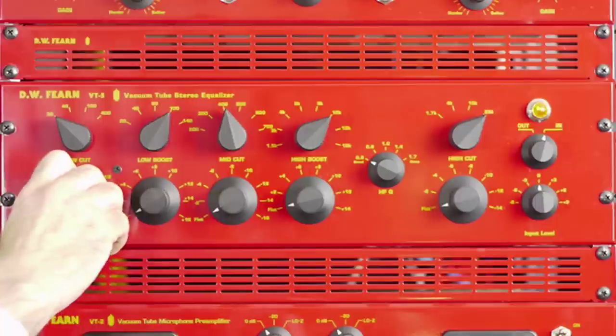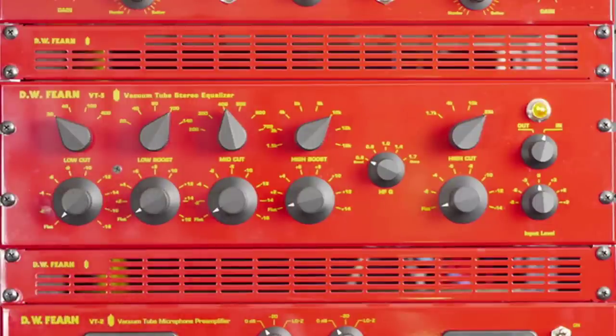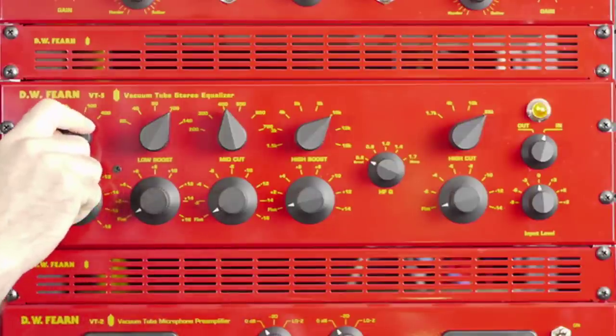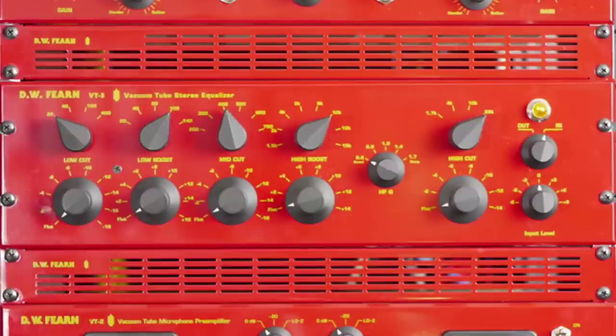The first band is called low cut. And this is used to reduce the level of the lowest frequencies. And you have four different frequencies you can choose from where to introduce that cut.